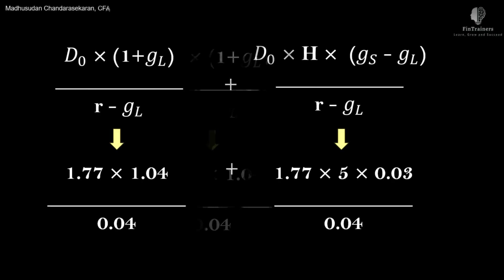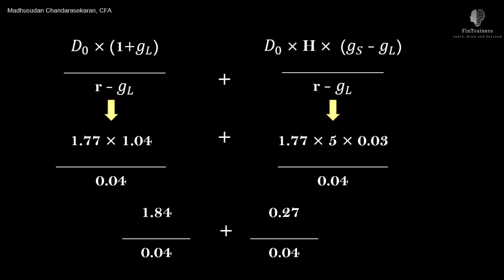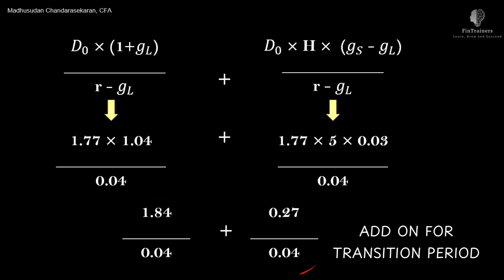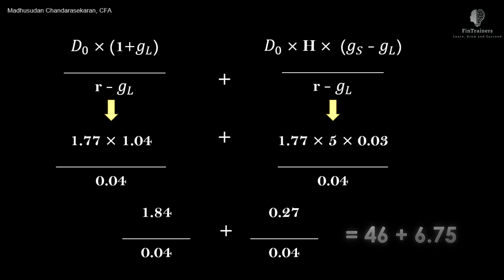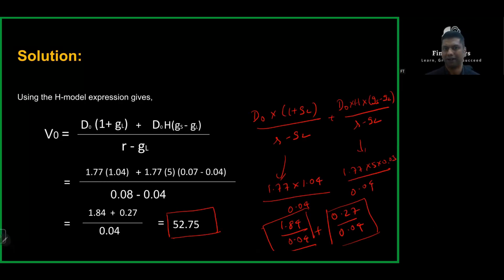The first component is 1.77 × 1.04 divided by (r minus g_L = 0.04), giving 1.84 / 0.04. The second component is 1.77 multiplied by H = 5 (half of the 10-year transition period), multiplied by delta g = 0.03, divided by 0.04, giving 0.27 / 0.04. Adding both components together gives a value of $52.75. Once you understand these two components of the H Model, the valuation is straightforward.